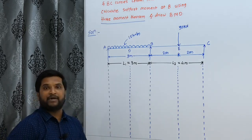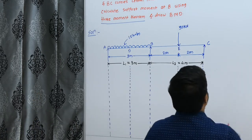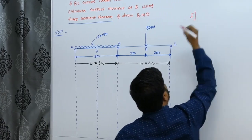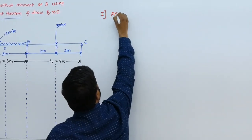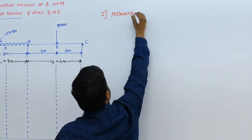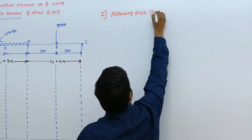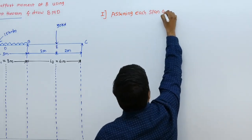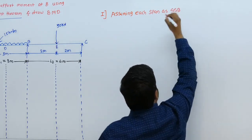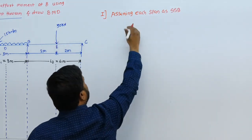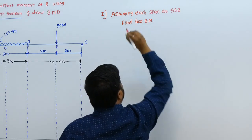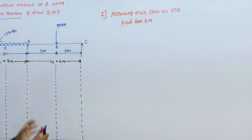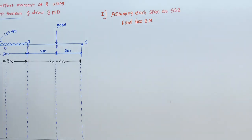Step 1: assuming each span as a simply supported beam, find the free bending moment. The beam is continuous over A, B, and C. We will consider AB and BC as separate simply supported spans.